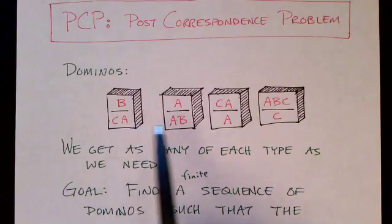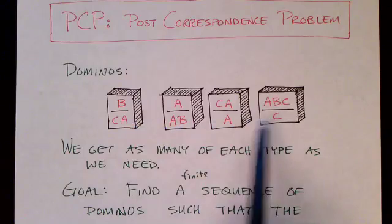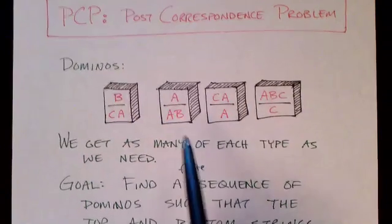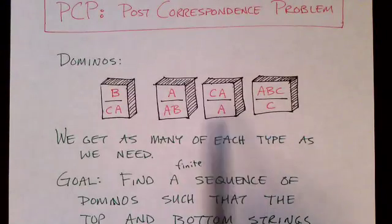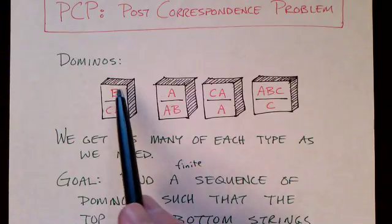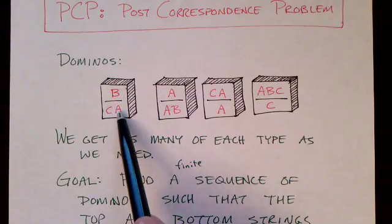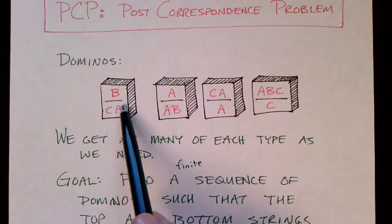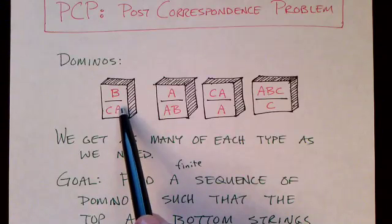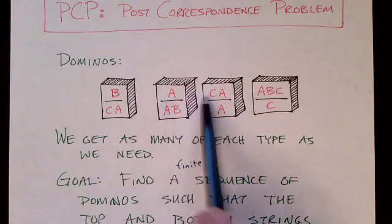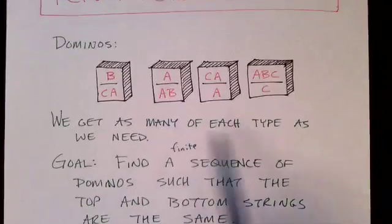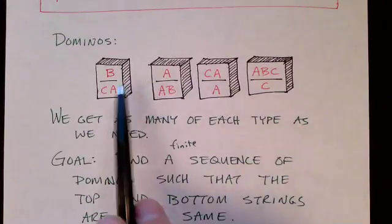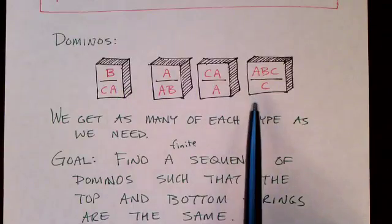Here we are given four tiles. Each tile is different and we have four different types of tiles. In finding a solution to this problem we can use each of these tiles as many times as we want. Each tile has a top and a bottom. This one has a top of B and a bottom of CA, and we have as many of this sort of tile as we need. There's an infinite supply of tiles. Sometimes they're called dominoes, sometimes they're called tiles, same thing.